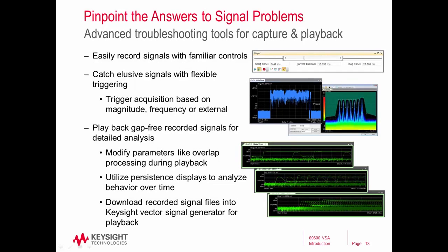In addition to acquiring signals for live measurements, the 89600 VSA software can also be used to record signals for playback later or to troubleshoot a signal. There's a player that can be used to easily record and then play back these signals, along with triggering to define when you would like to start the acquisition — very helpful for catching elusive signals. Playback of these signals is gap-free, and you can modify parameters like overlap processing to slow down or speed up playback. You can utilize persistence displays or spectrogram displays for more information, and source control enables you to play back a recorded file through a signal generator.